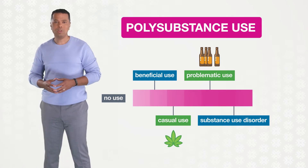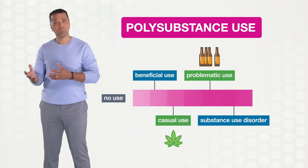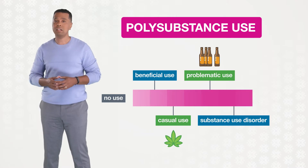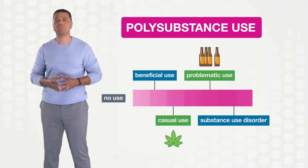The way people use substances can also vary along the spectrum. For example, a person may engage in problematic use of alcohol and casual cannabis use.